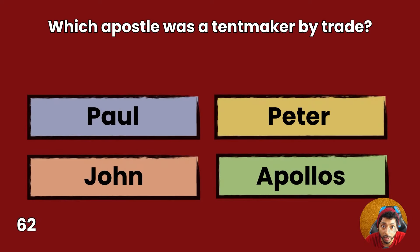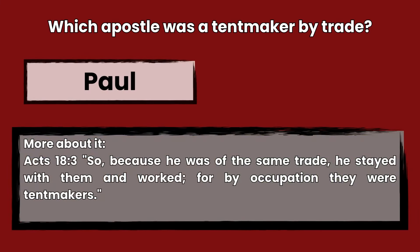Question 62: Which apostle was a tentmaker by trade? Paul, Peter, John, or Apollos? Answer: Paul. Acts 18:3 — So, because he was of the same trade, he stayed with them and worked, for by occupation they were tentmakers.